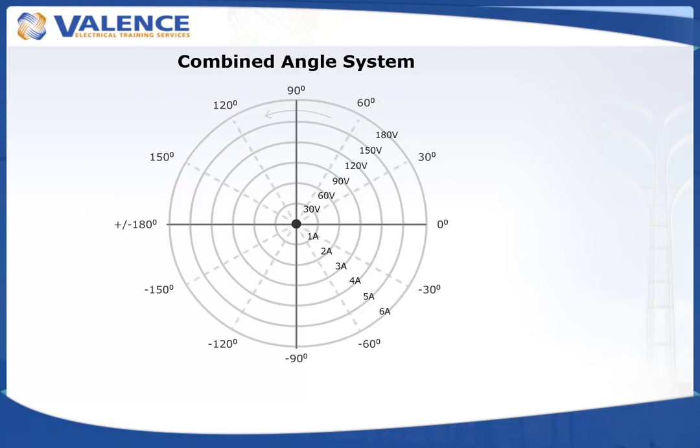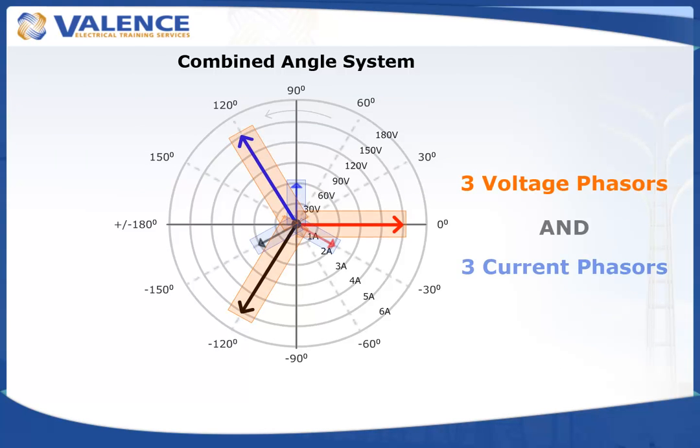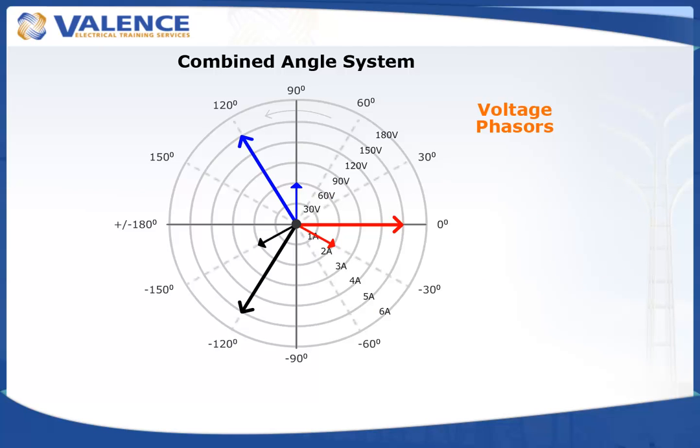Phasor diagrams usually include three voltage phasors and three current phasors, which are plotted in groups with different scales. The procedure for plotting multiple groups on a phasor diagram is the same once you choose the angle system you want to use, but we use different arrowheads to indicate which signal group each phasor is in. Voltage phasors are typically plotted with open arrowheads, and current phasors are typically plotted with closed arrowheads. You should always have some visual cue when different types of phasors are plotted on the same diagram.